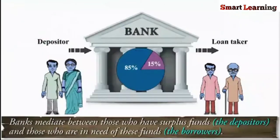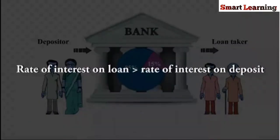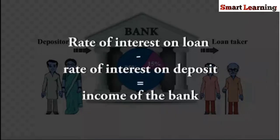In this way, banks mediate between those who have surplus funds, that is the depositors, and those who are in need of these funds, that is the borrowers. Banks charge a higher interest rate on loans than what they offer on deposits. The difference between what is charged from the borrowers and what is paid to the depositors is the bank's main source of income.